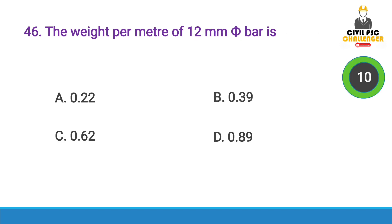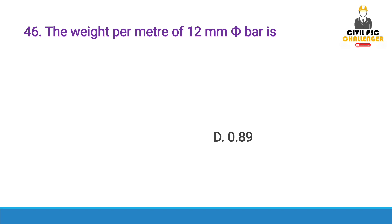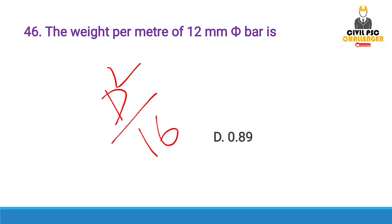Next question: The weight per meter of a 12 mm steel bar is — Answer option D, 0.888 kg/m. The formula used is D² / 162.